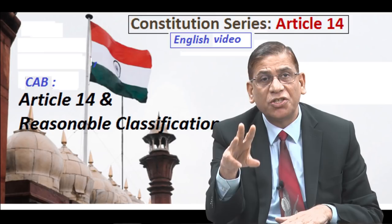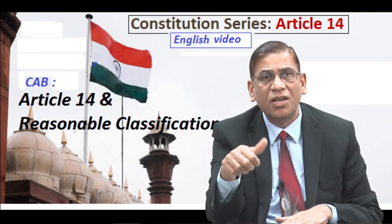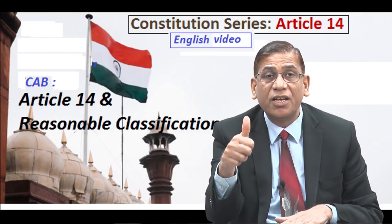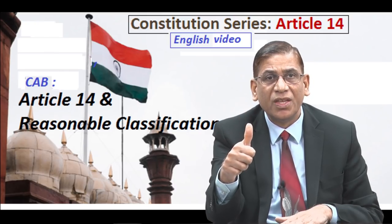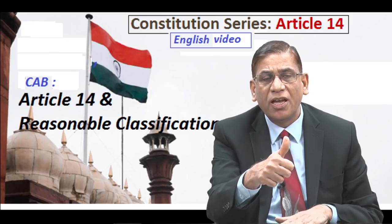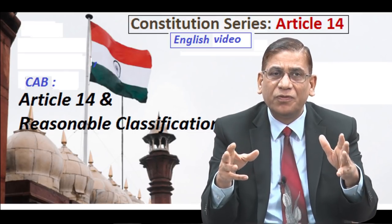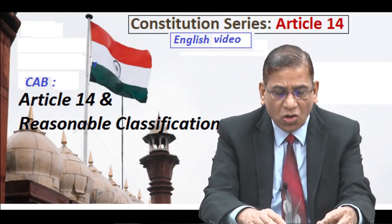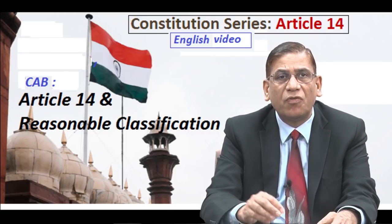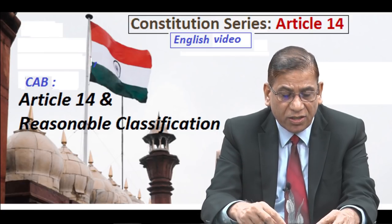But such classification must satisfy three tests: it must be reasonable classification, it must have a rational — and as the Supreme Court has said, just — object to achieve. Here it is very clear that we have sympathies with certain religious groups and antipathy with others, and such a distinction is not a just distinction. The Supreme Court has also added the concept of arbitrariness, saying that any law which is arbitrary violates the right to equality.